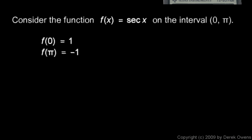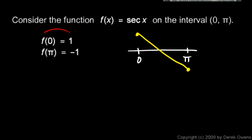Consider this function f of x equals secant x on the interval 0 to pi. If we were trying to find the zeros of the function, we know at 0 it has a value of 1, and at pi it has a value of negative 1. Then it must go through the x-axis somewhere between 0 and pi. So if you're asked on a multiple choice test whether f of x has a zero on this interval and you mark yes, you would in fact be wrong.